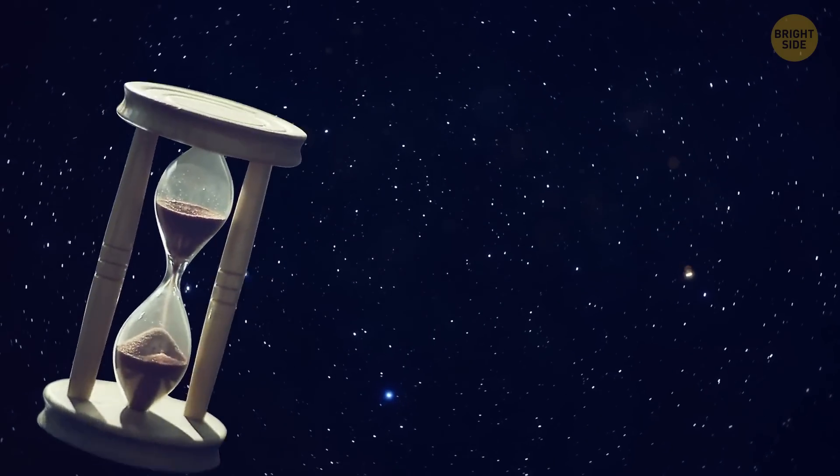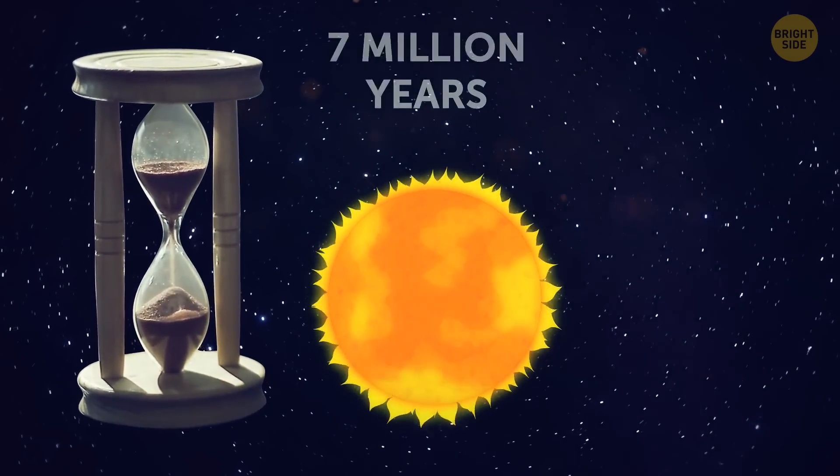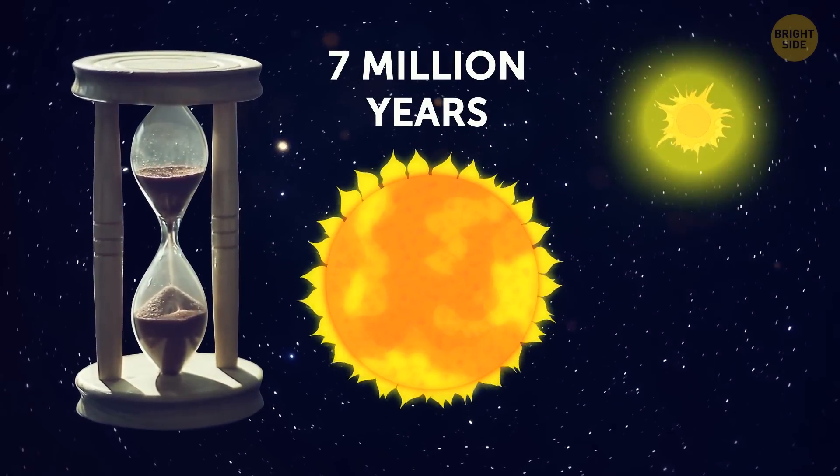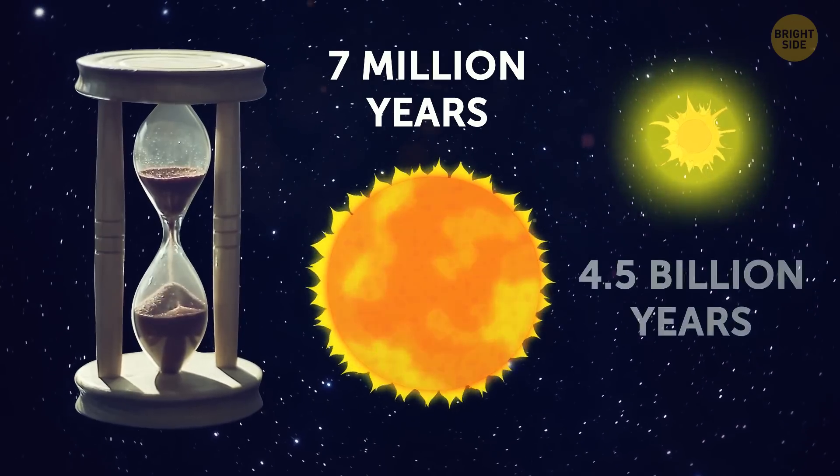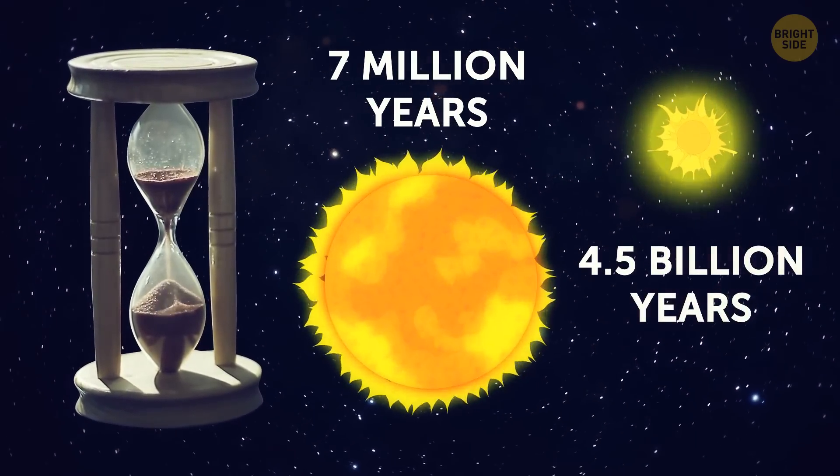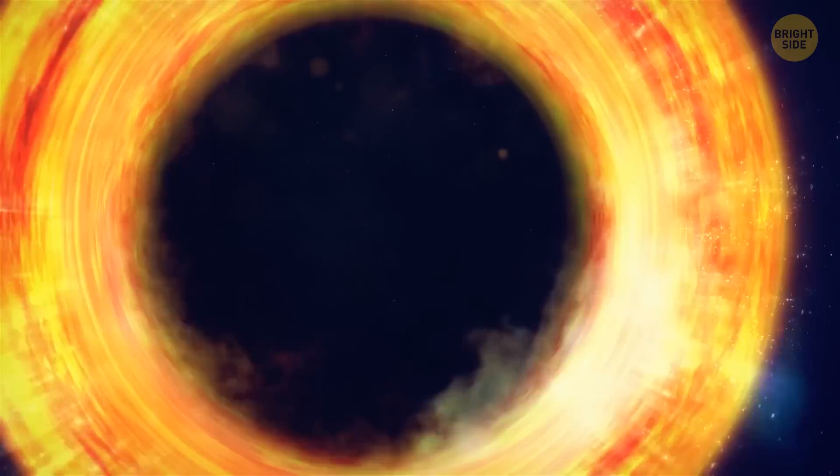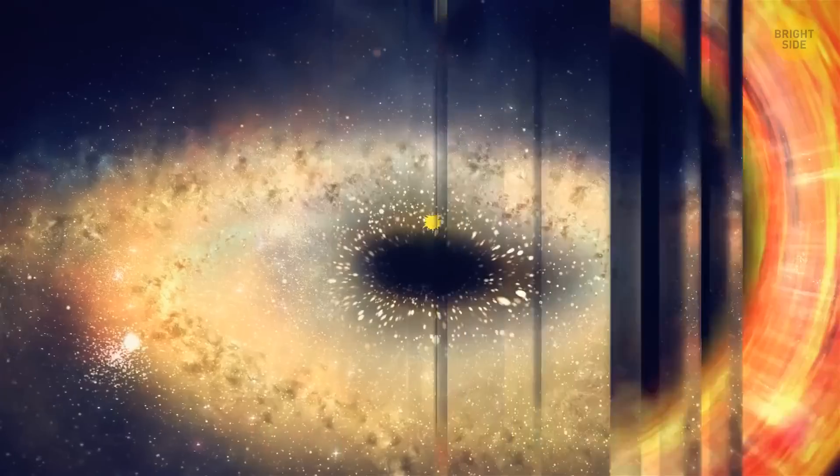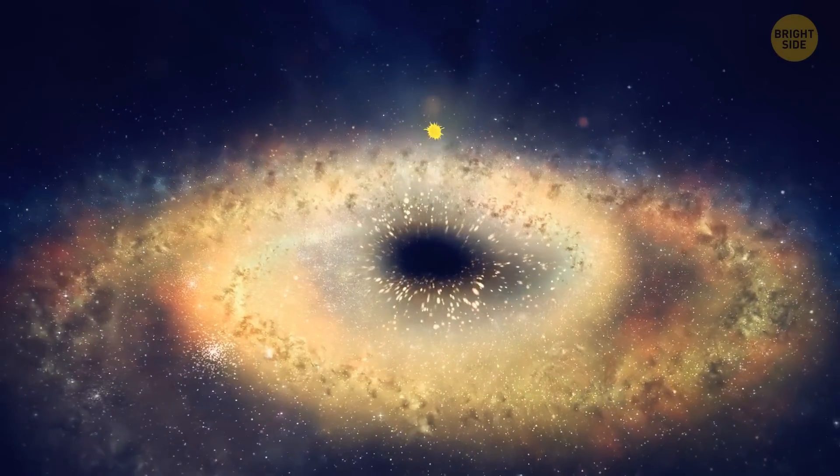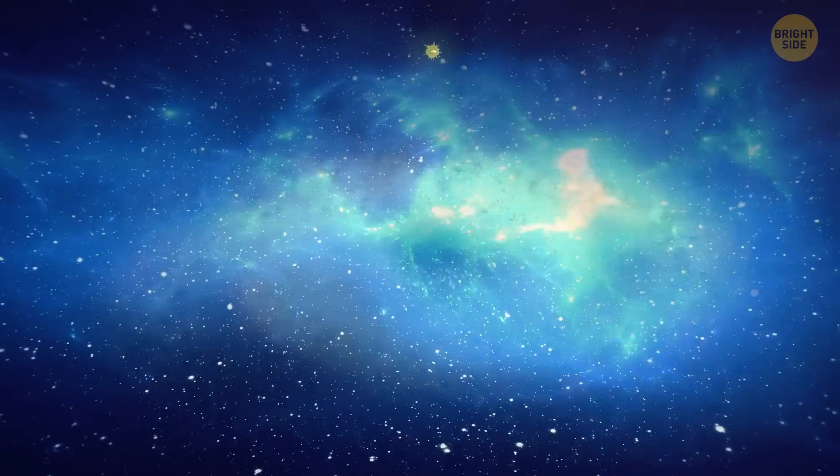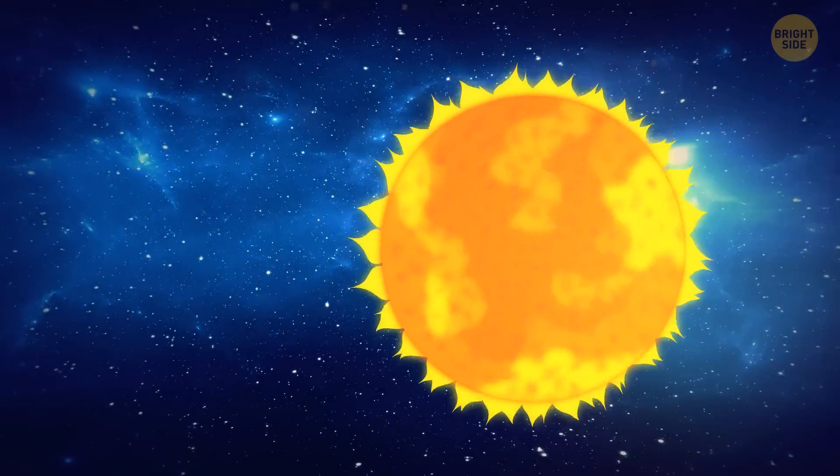Quasi-stars would have a pretty short lifespan, around 7 million years. Just for comparison, our Sun is about 4.5 billion years old, and it's only halfway through its lifetime. But either way, during this short period, the black hole at the center would grow to be about 1,000 to 10,000 times the size of our Sun.